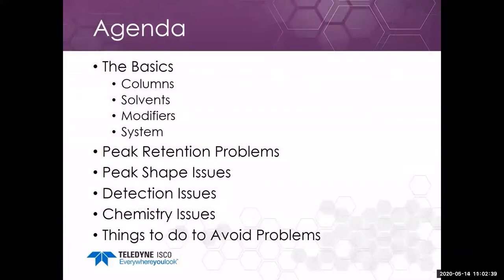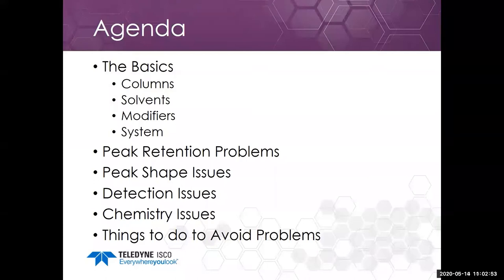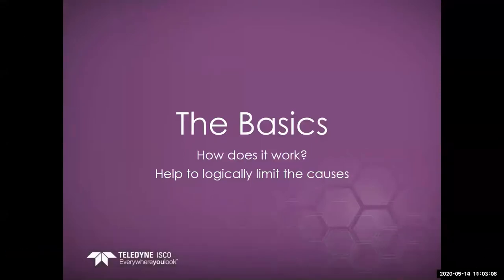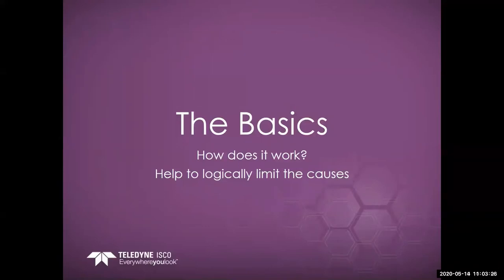We're going to go over the basics of chromatography first. We'll talk about peak retention issues, peak shape issues, what happens if your detector seems to be acting up, and a little bit of time on column chemistry — how your chemistry can cause your chromatography to act up and things you can do to avoid issues. By knowing the basics you can limit the causes. You can think about what you see, rule out certain failure modes, and logically determine where the problem lies.